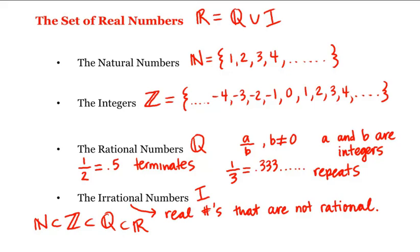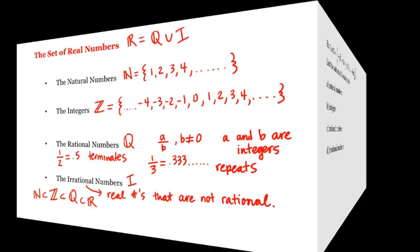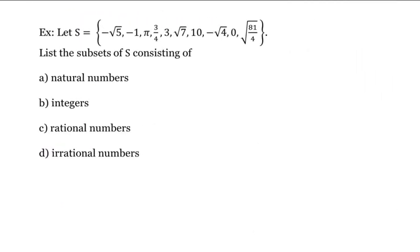Let's look at an example. Let S be this set, and we want to list the subsets of S, consisting of the natural numbers, the integers, the rationals, and the irrationals.